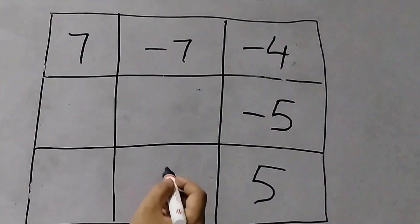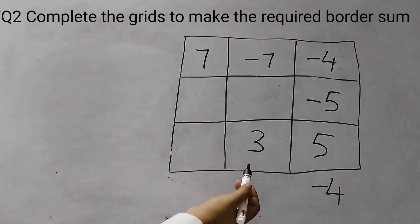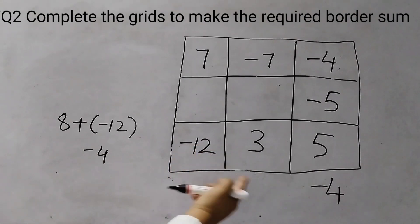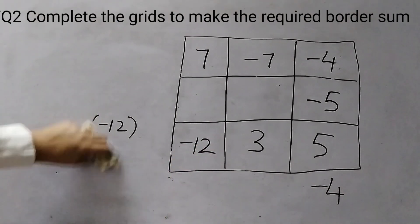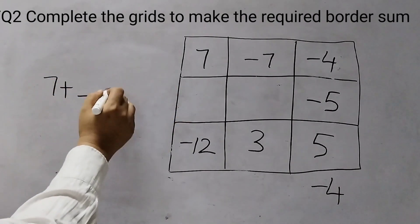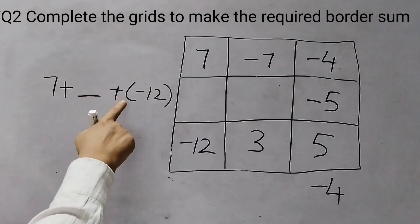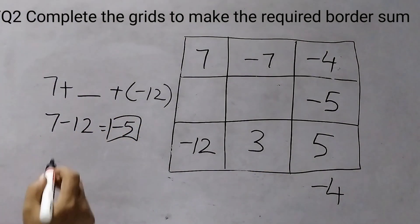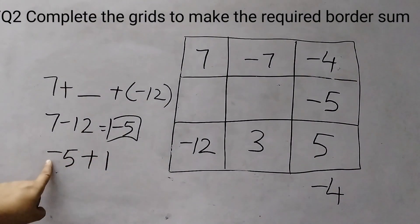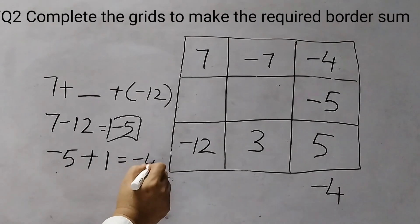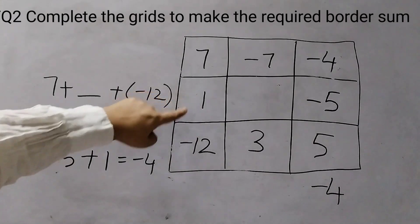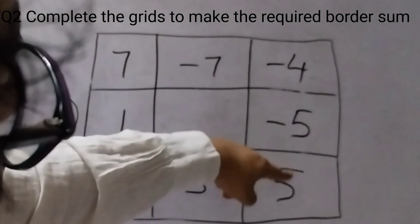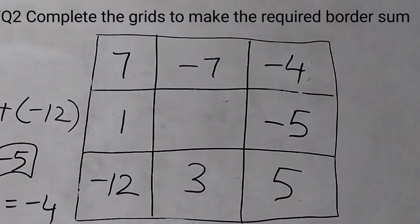Now I have a 5 here in the bottom row. I can take any number — let's say 3. So 5 plus 3 is 8, and 8 plus minus 12 gives minus 4, so I take minus 12. For the left column: 7 plus blank plus minus 12 — calculate 7 plus minus 12, which is minus 5. Minus 5 plus 1 gives minus 4, so this will be 1. Checking: 7 plus 1 is 8, 8 plus minus 12 is minus 4. And 5 plus 3 is 8, minus 12 plus 8 is minus 4. We are done with question number 2.